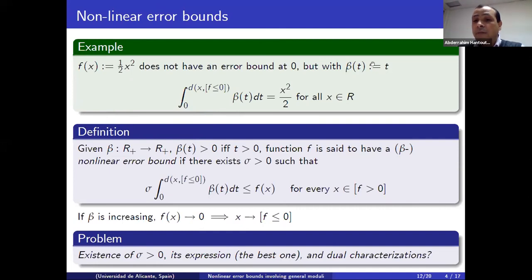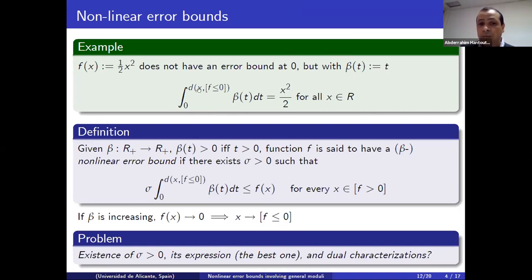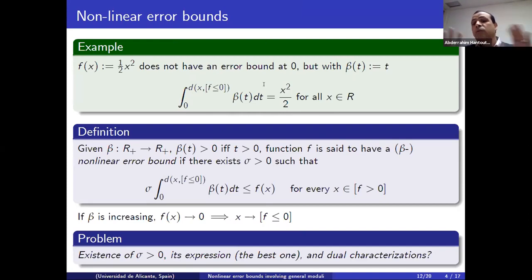If we consider this function, this is what we call modulus. This modulus beta of t equals t. If I consider this quantity — this is the usual integral — this is just the distance squared from X to the sub-level set, which exactly coincides with my function. So this function doesn't satisfy this error bound, but satisfies a similar property considering this integral instead of the distance.